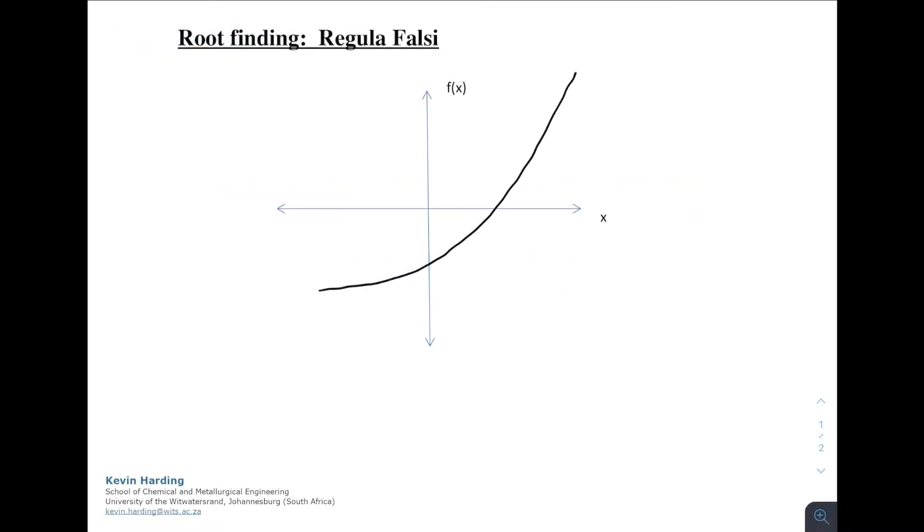In Regula Falsi, if we have a continuous curve and we can find a point x1 and point x2 such that the function values of x1 and x2 give a y value with a positive sign and a negative sign,